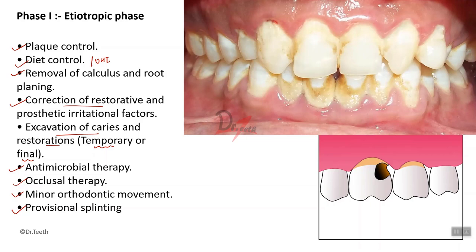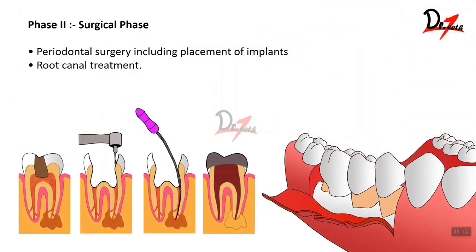Once you have finished phase one therapy you move on to phase two, the surgical phase. As the term suggests, you carry out surgeries — periodontal surgeries, mucogingival surgeries, placement of implants — all these procedures come under phase two therapy. If we talk about root canal treatment: in a periodontal practice you encounter many cases of endo-perio lesions where you need to do endodontic treatment before periodontal treatment. In such cases root canal treatment also comes under phase two of surgical therapy.